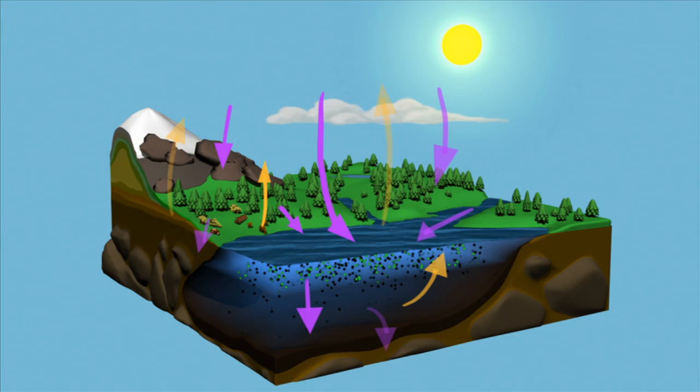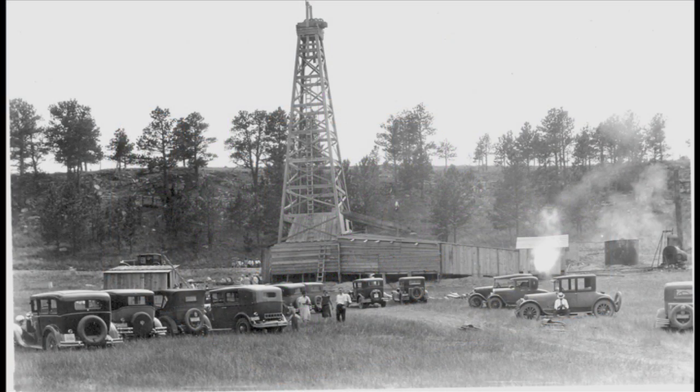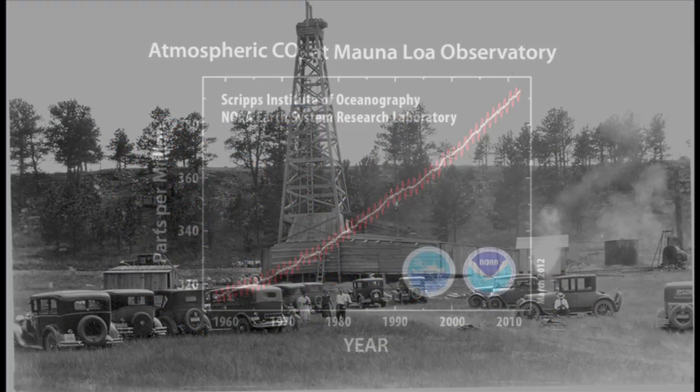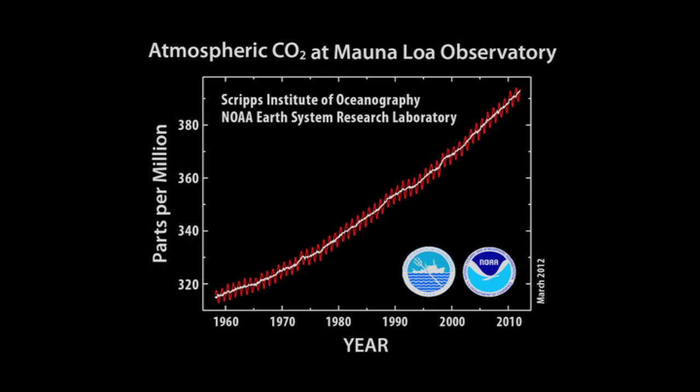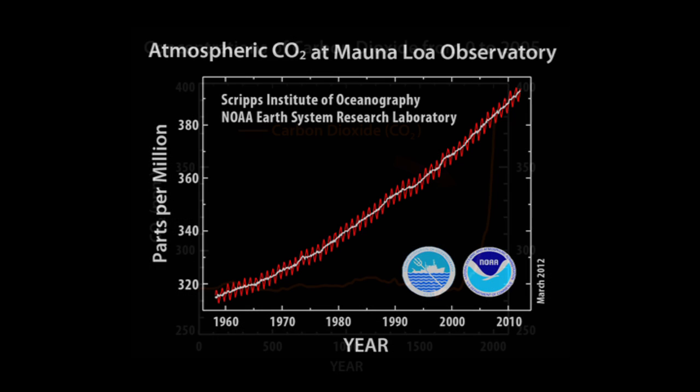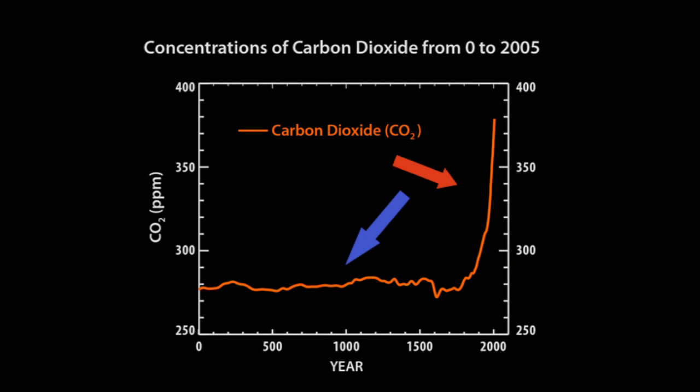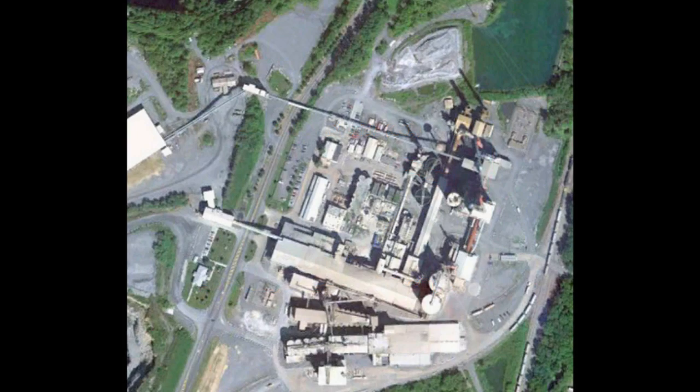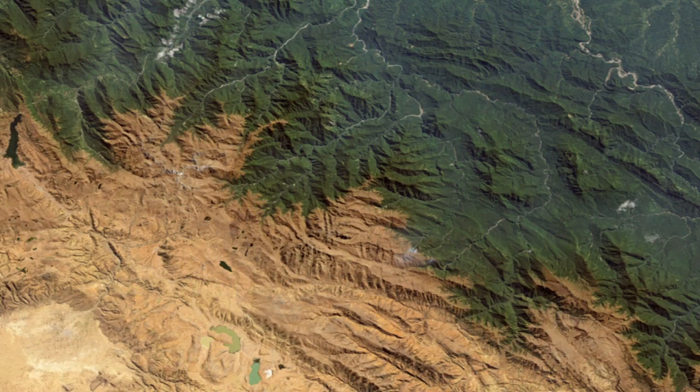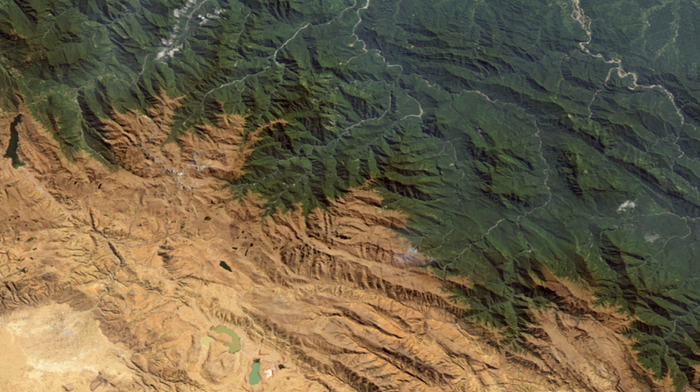Once humans began digging up long buried forms of carbon, such as coal and oil, and burning them for energy, additional CO2 was released into the atmosphere much more rapidly than in the natural carbon cycle. Other human activities, such as cement production and cutting down forests, have also added CO2 to the atmosphere.